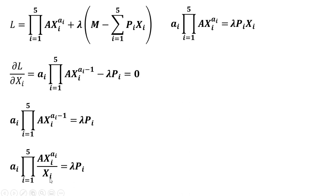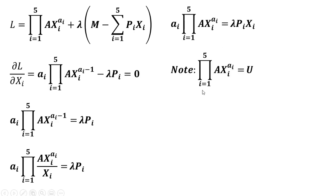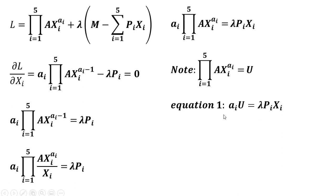The next step is to multiply both sides through by x subscript i, so we lose x subscript i in the denominator and it moves to the right-hand side. We then note that this term is just our utility function, so we make a substitution for U into the above equation — we will call that equation one.